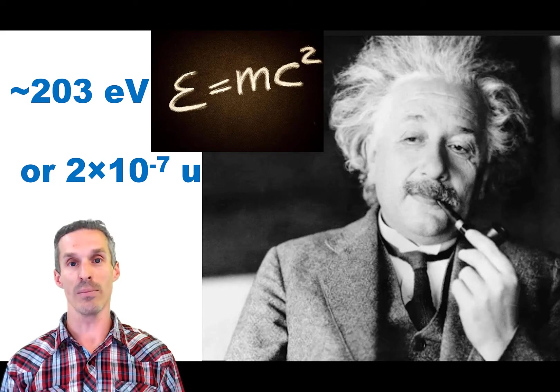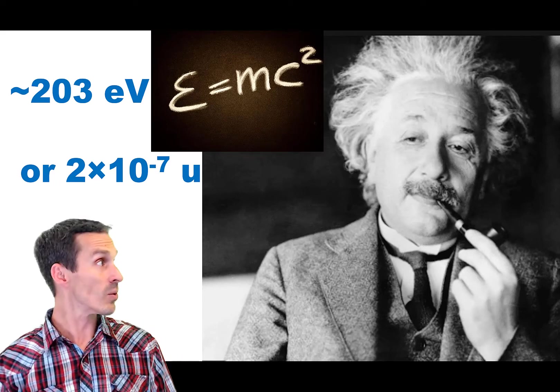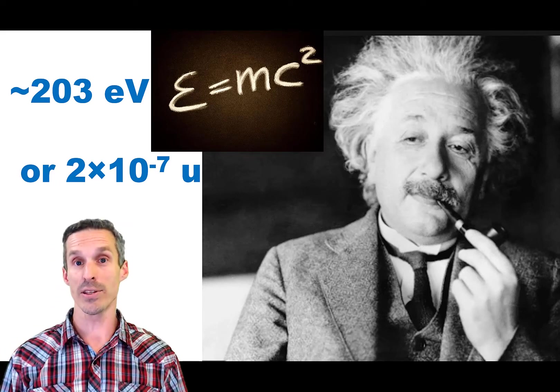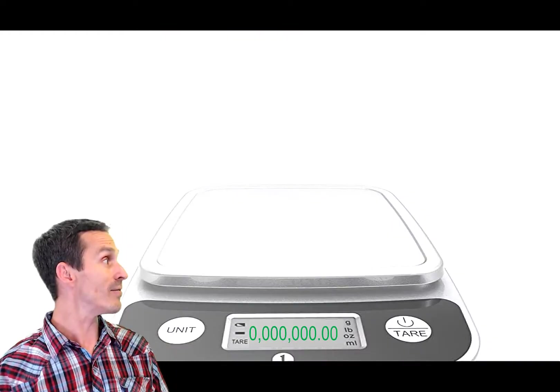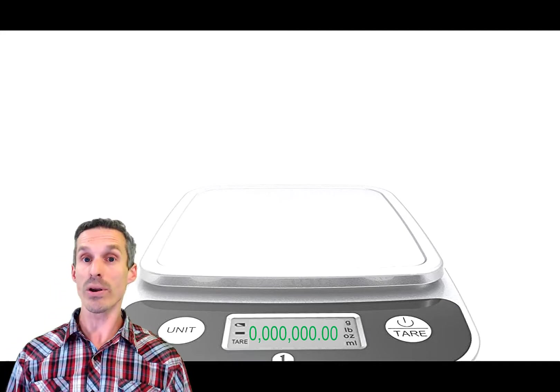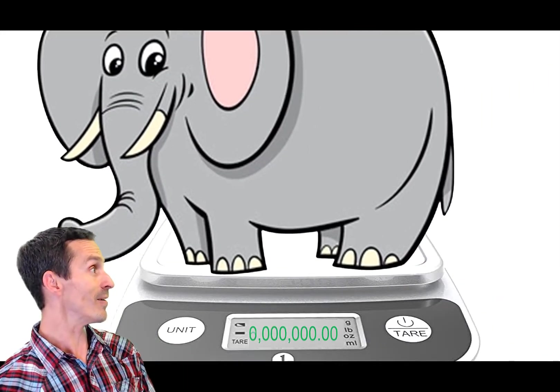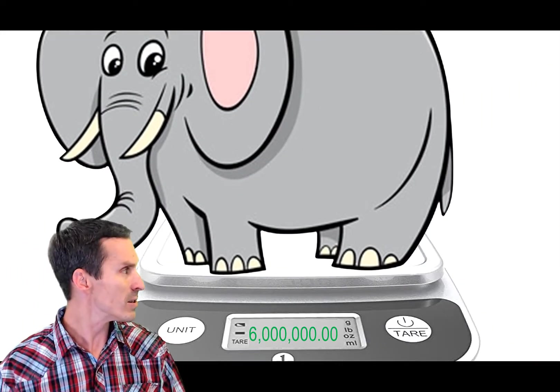Well actually we could just calculate it. So with about 200 electron volts, we see a mass increase of 2 times 10 to the minus 7 atomic mass units. So we're trying to compare that mass against the mass of rhenium.